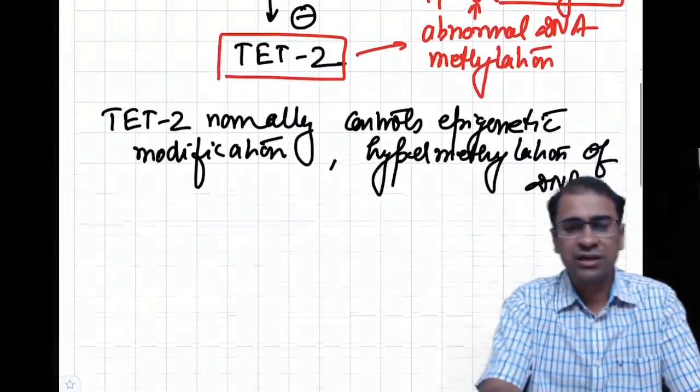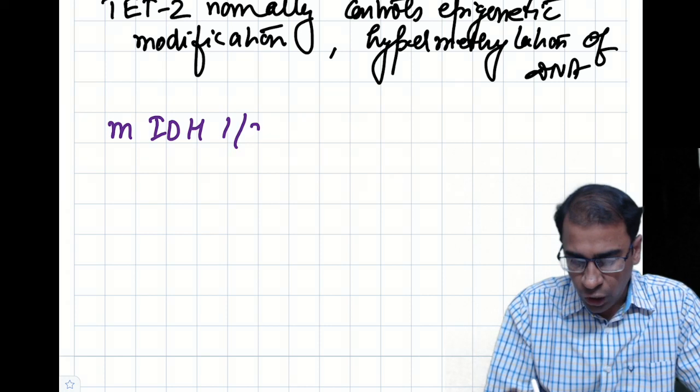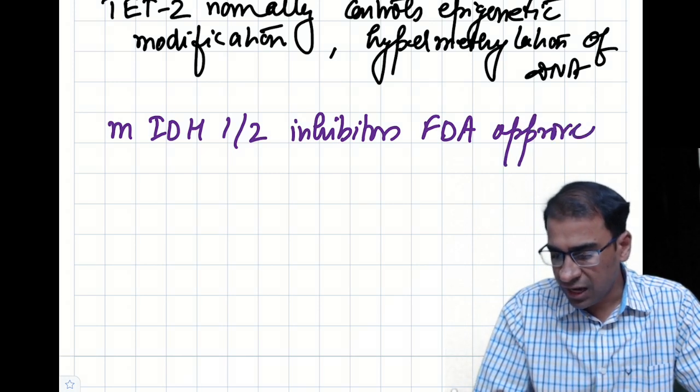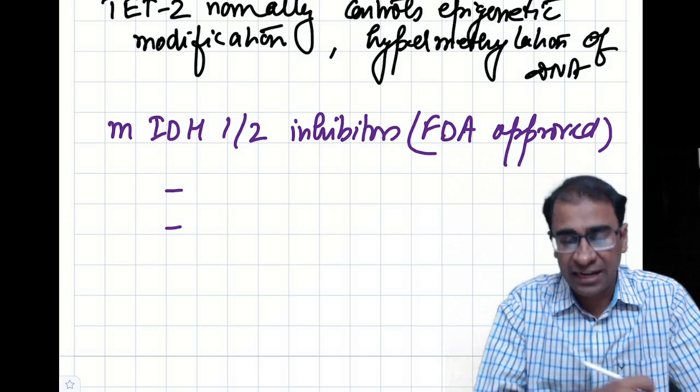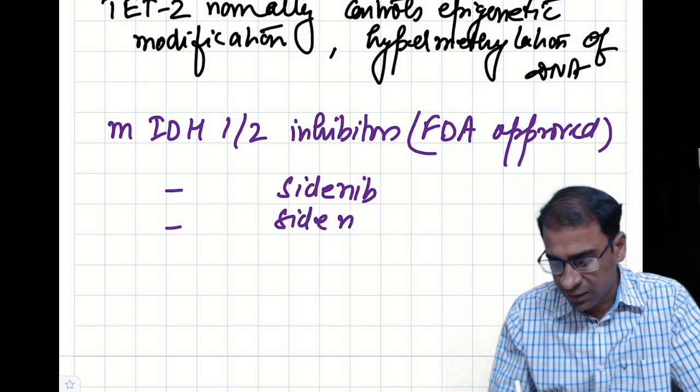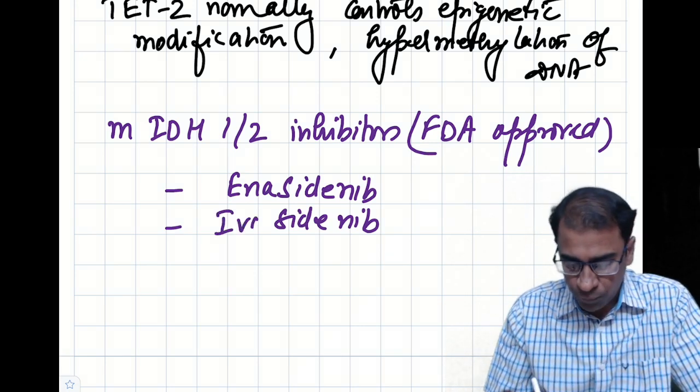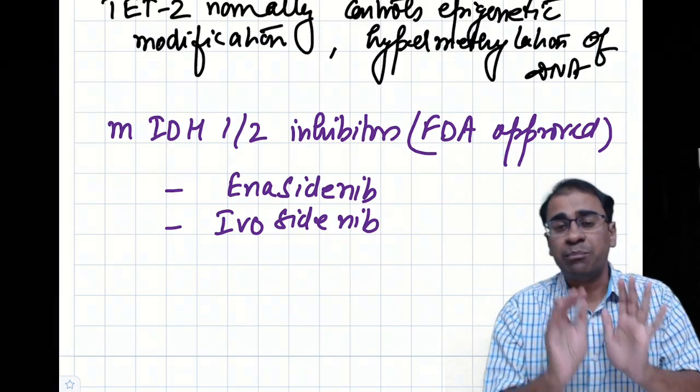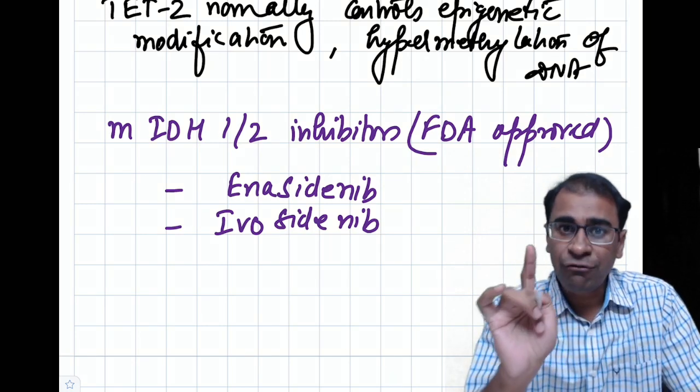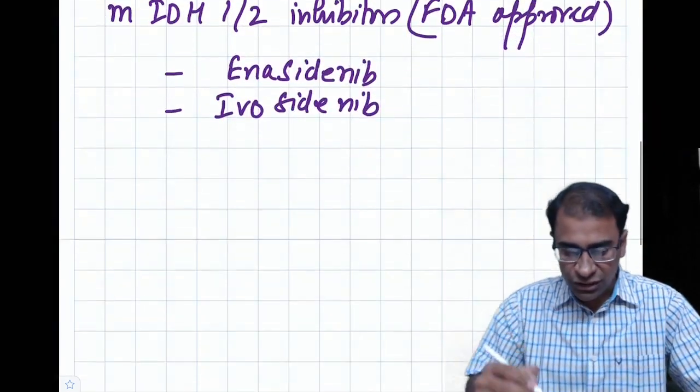What are those drugs? Recently approved drugs which are FDA approved include Sidenib. There are two types of Sidenib which have been discovered: Enasidenib and Ivosidenib. These two are being used to treat those cancers which have this typical mutation of IDH, only mutated IDH. Therefore, a mutated IDH has better prognosis compared to a normal or unmutated or wild type of IDH.